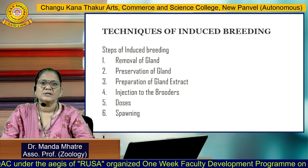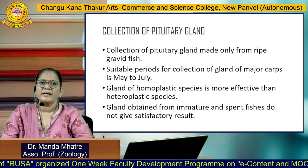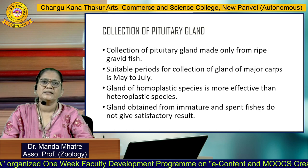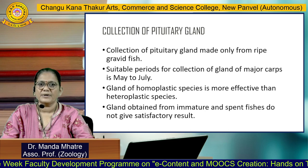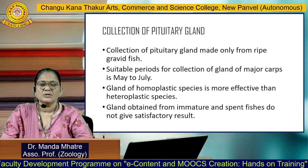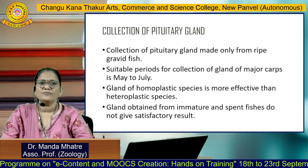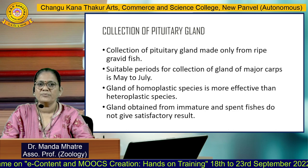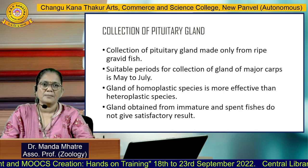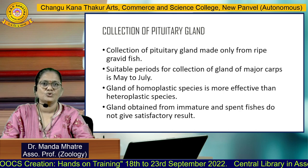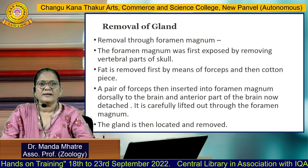The technique involves a number of steps: first, removal of the gland; second, preservation of the gland; third, preparation of gland extract; fourth, injection to the brooders; then doses and spawning. Collection of the pituitary gland is made only from ripe, gravid fish. The suitable period for collection from major carps is May to July. Gland of homoplastic species is more effective than heteroplastic species. Glands obtained from immature and spent fishes do not give satisfactory results.